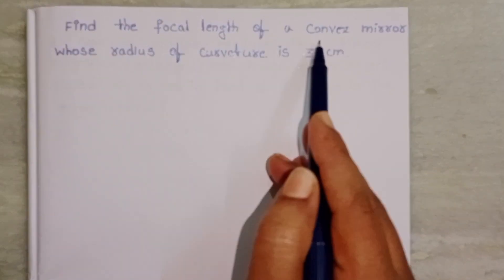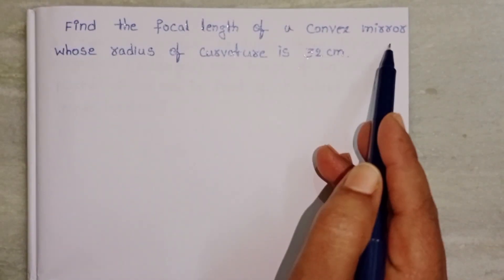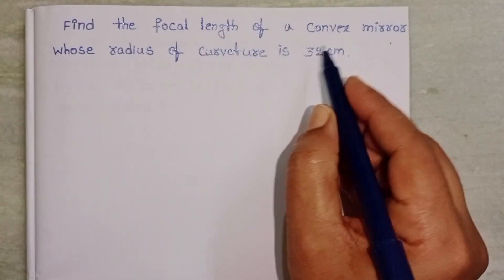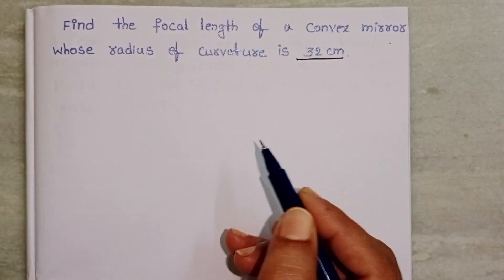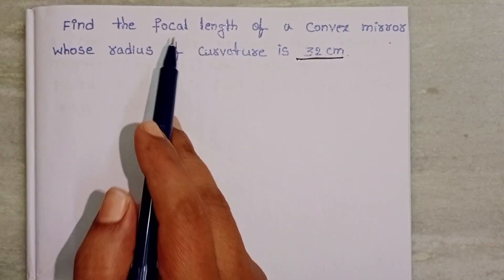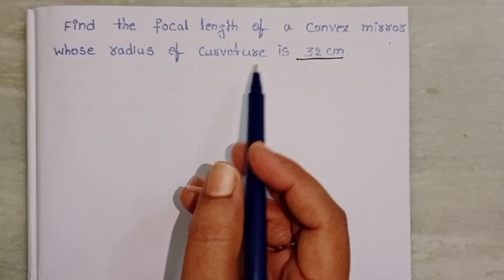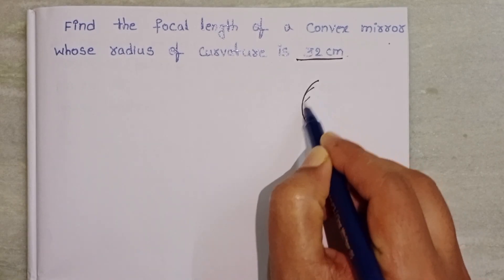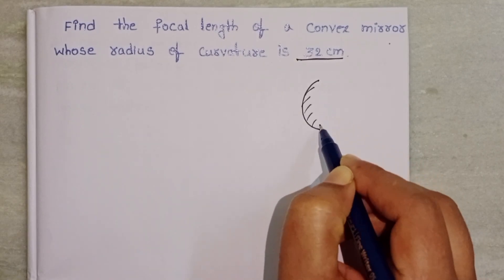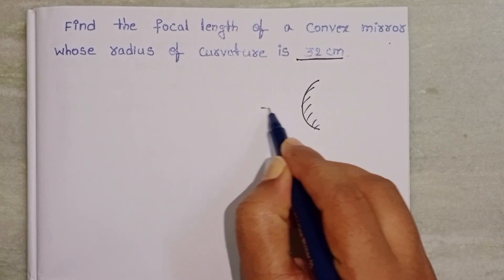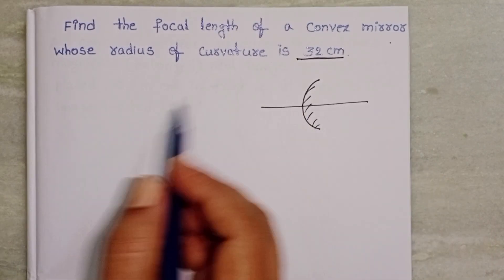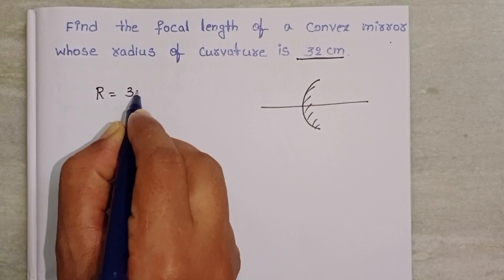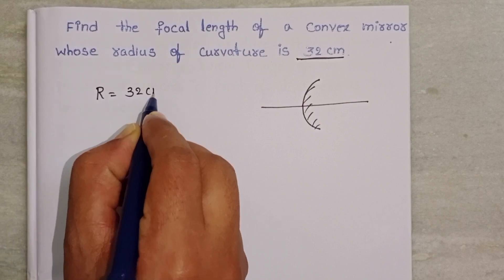Find the focal length of a convex mirror whose radius of curvature is 32 cm. The given mirror is a convex mirror, and the radius of curvature is 32 cm.